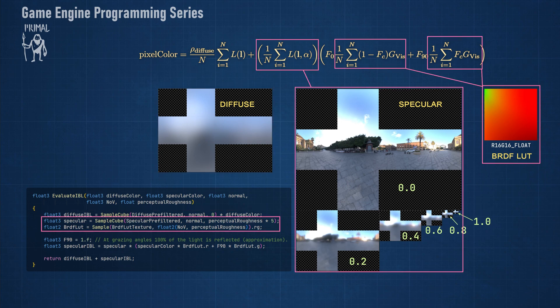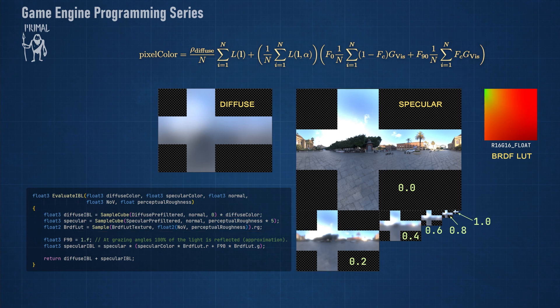The specular part consists of the specular cube map and the BRDF lookup texture, so we sample those as well.